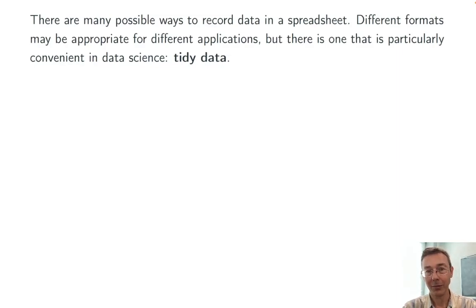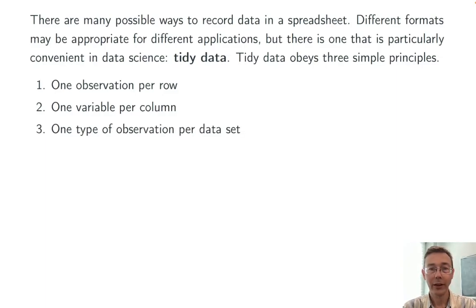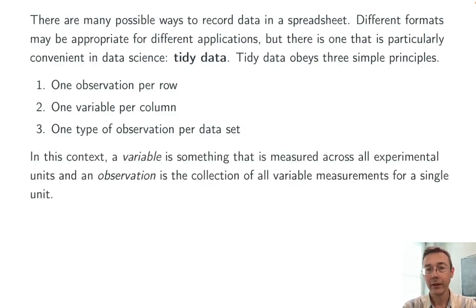In order for a set to be considered tidy, it has to obey three simple principles. First, each row should be one and only one observation. Second, each column should be one and only one variable. And finally, your entire spreadsheet should consist of exactly one sort of observation. In this context, a variable is just something that's measured across all your experimental units, and an observation is just the collection of all variable measurements for a single experimental unit.